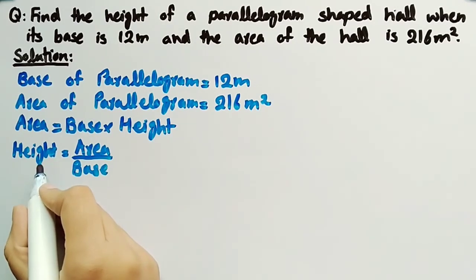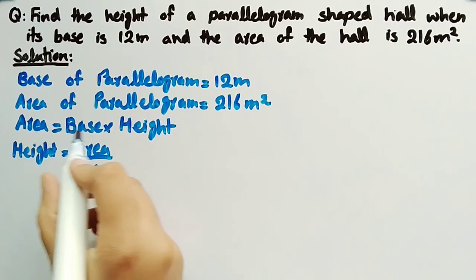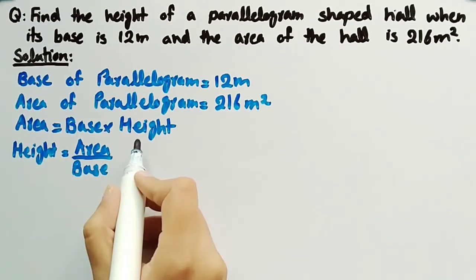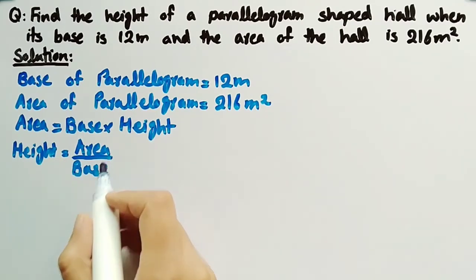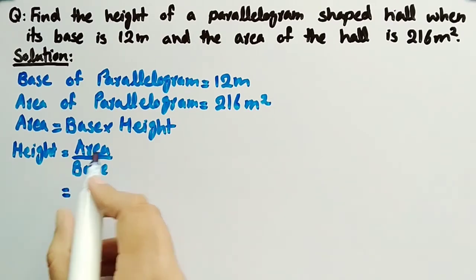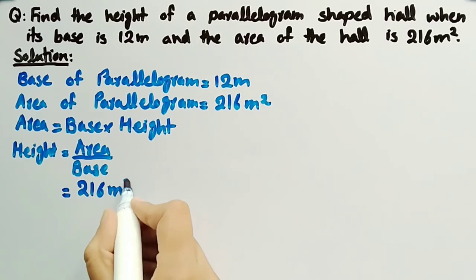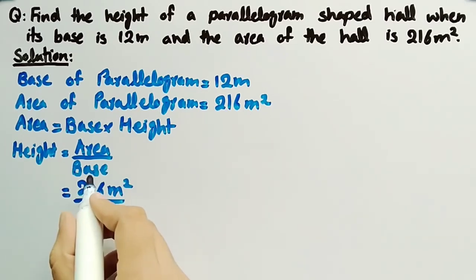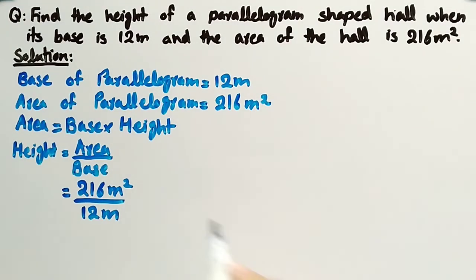Now we will substitute the values. We know that area is equal to 216 square meters divided by base which is 12 meters. We can also write it as 216 meters squared equals 216 meters times meters divided by 12 meters.